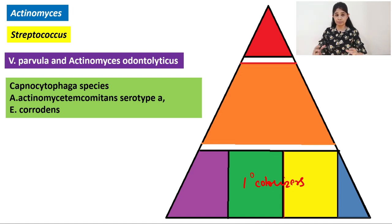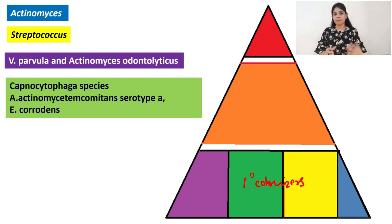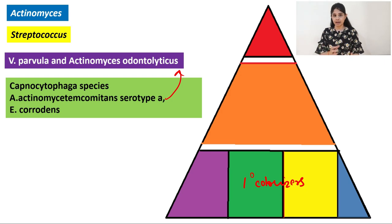Remember, the base of the pyramid is formed by the primary colonizers. The yellow complex bacteria are the Streptococcus species — Streptococcus mitis, Streptococcus mutans, Streptococcus oralis, etc. The purple complex is occupied by Veillonella parvula and Actinomyces odontolyticus. The green complex bacteria are the Capnocytophaga species, Aggregatibacter actinomycetemcomitans serotype A — whereas serotype B falls under the purple group — and Eikenella corrodens. These are the primary colonizers.